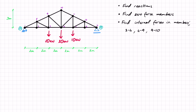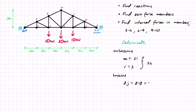The first thing we're going to do is check if this truss is determinate. If it is, we can solve it using the method of sections with only equations of equilibrium. Our unknowns are the number of members plus reactions: 21 members and 3 reactions gives 24 unknowns. Our knowns are two equations per joint: 2 times 12 joints equals 24. Since these are equal, this is a determinate truss.